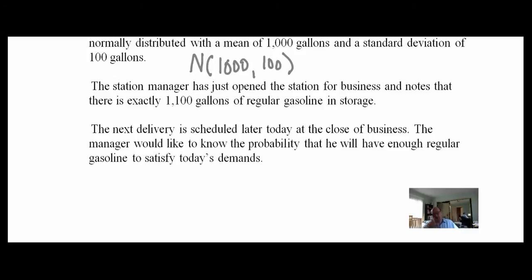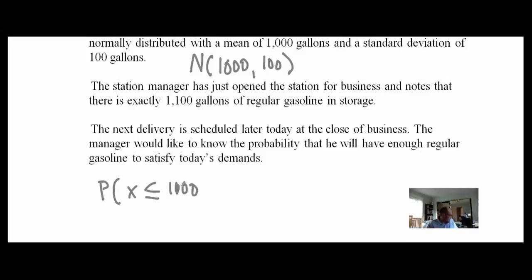This question is asking about the probability he won't run out of gas. We write that as the probability that x is less than or equal to 1,100. If x — daily demand — is less than or equal to 1,100, he won't run out. Let's draw a picture with N(1000, 100).